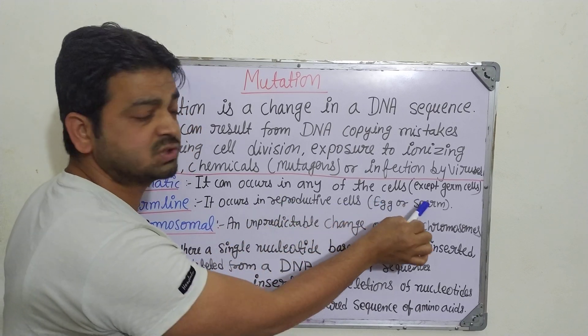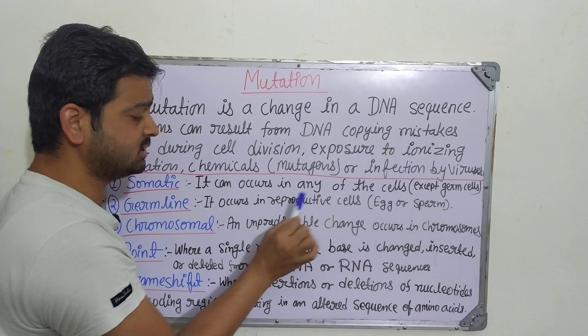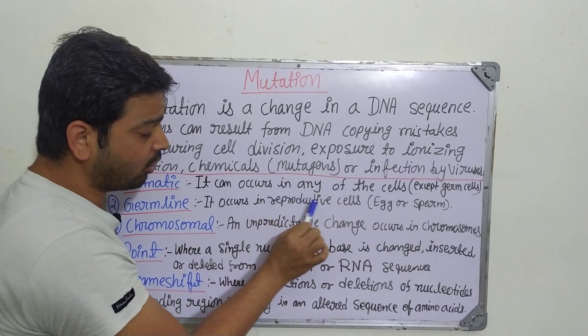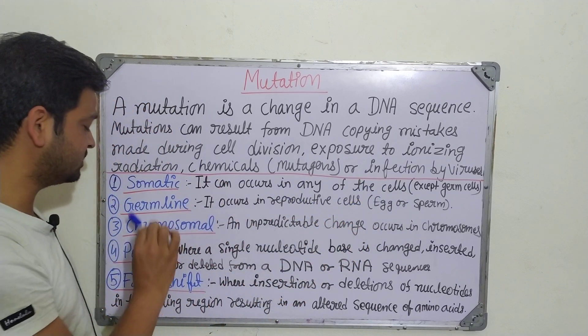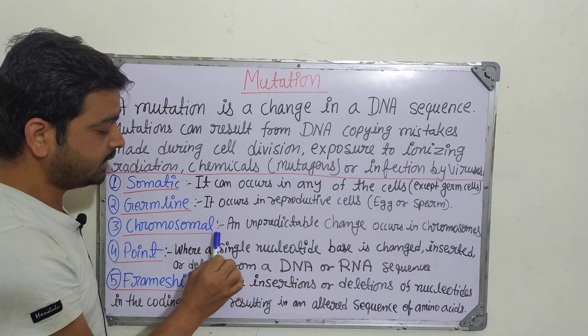Coming to the germline mutation, that is the second type. It occurs in reproductive cells — for example, egg or sperm. Always remember, germline mutation occurs in the reproductive cells.